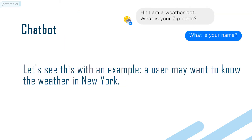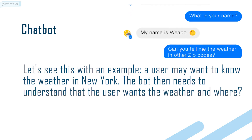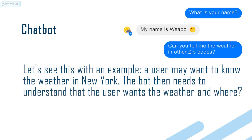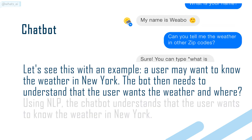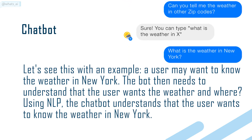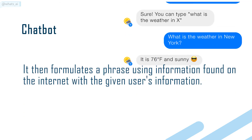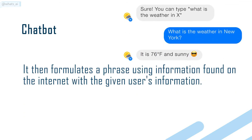For example, a user may want to know the weather in New York. The bot then needs to understand that the user wants the weather and where. Using NLP, the chatbot understands that the user wants to know the weather in New York, and it then formulates a phrase using information found on the internet with the given user's information.